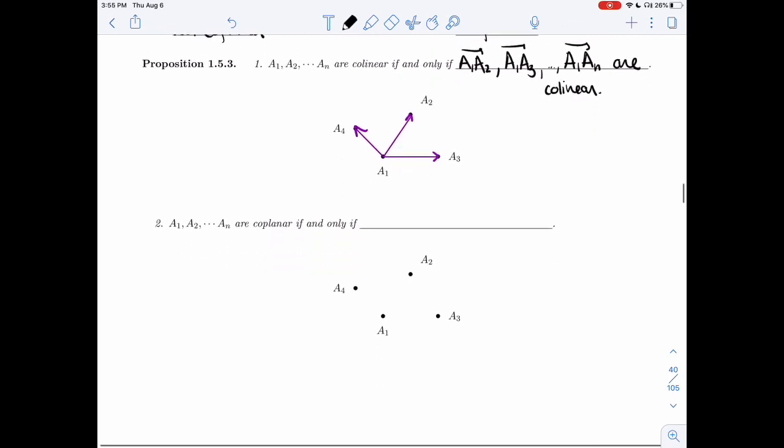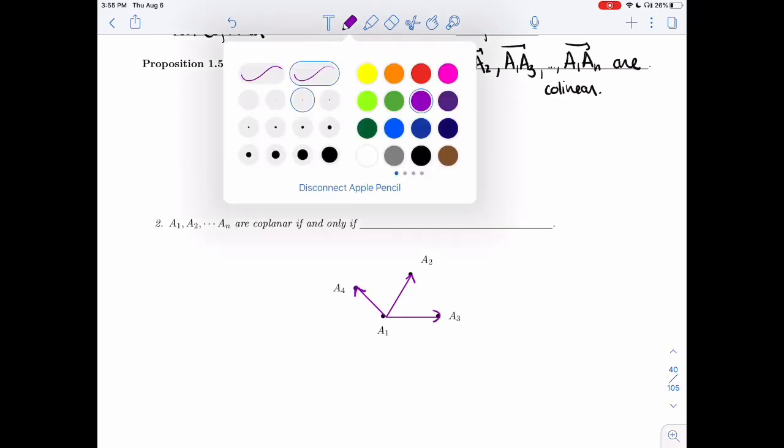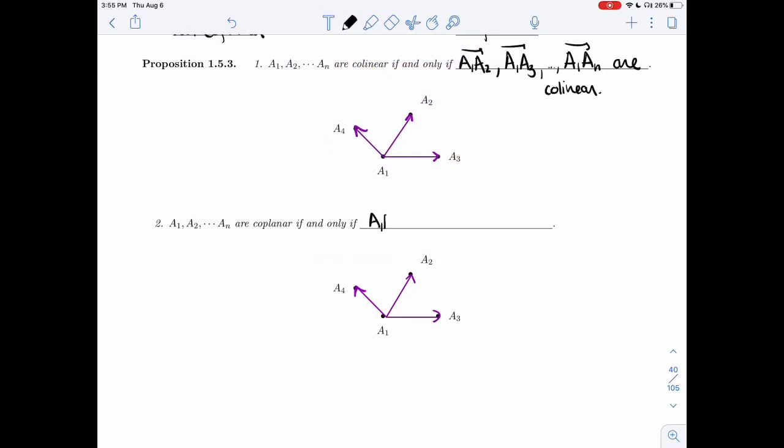And then they're coplanar. Same thing. I'm going to look at these vectors. If all of these vectors are on the same plane, then all the points would be on the same plane and vice versa. So A1A2, A1A3, A1AN are coplanar. So what we've learned about vectors being coplanar and how to test, we can use with points. And that's what you'll do in the exercise sheets.